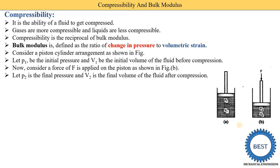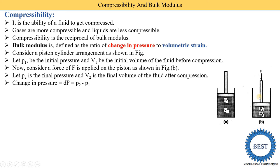In state two, we use the terms p2 and v2. p2 is the final pressure and v2 is the final volume of the fluid after compression. Change in pressure is denoted as dp and equals p2 minus p1. For example, if pressure before compression is 1 bar and after compression is 10 bar, after compression the pressure always increases and the volume always decreases.